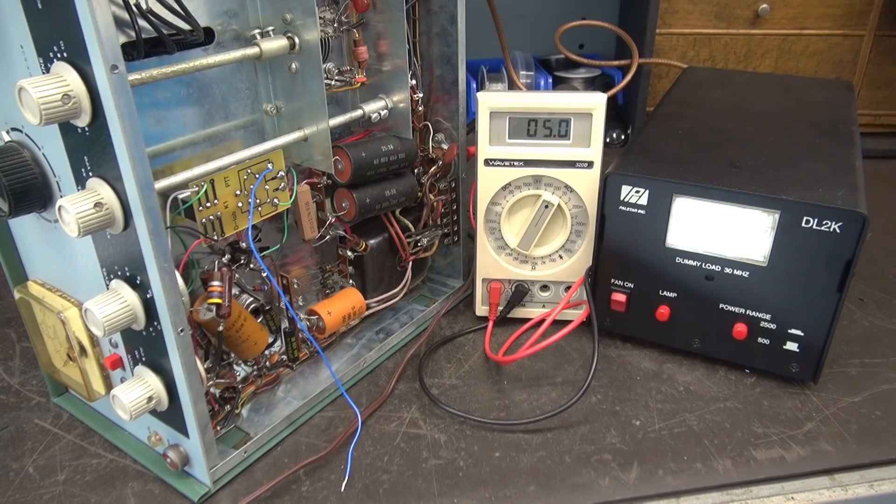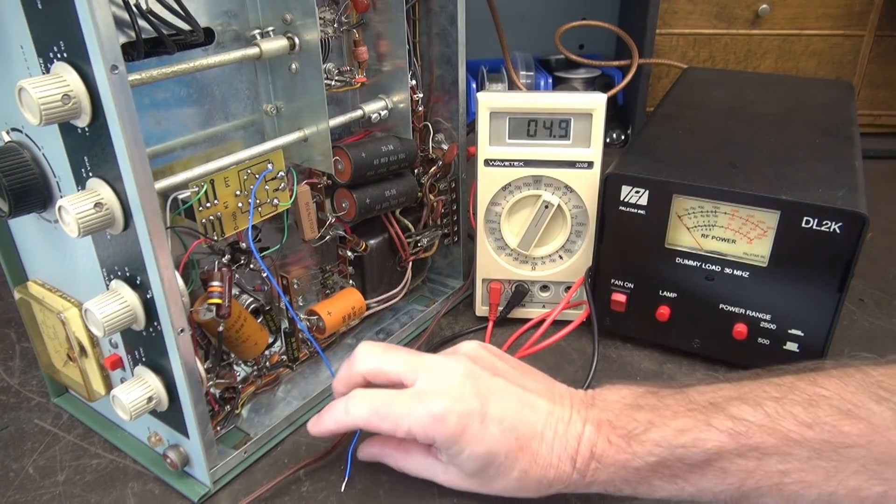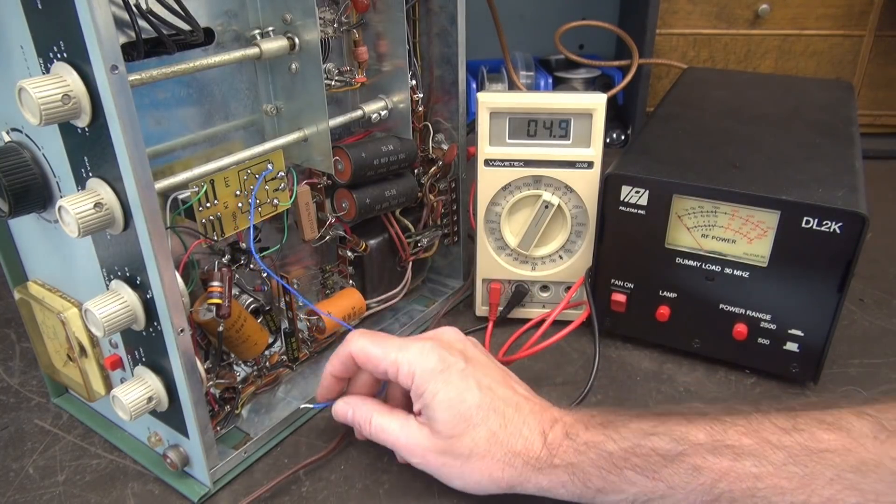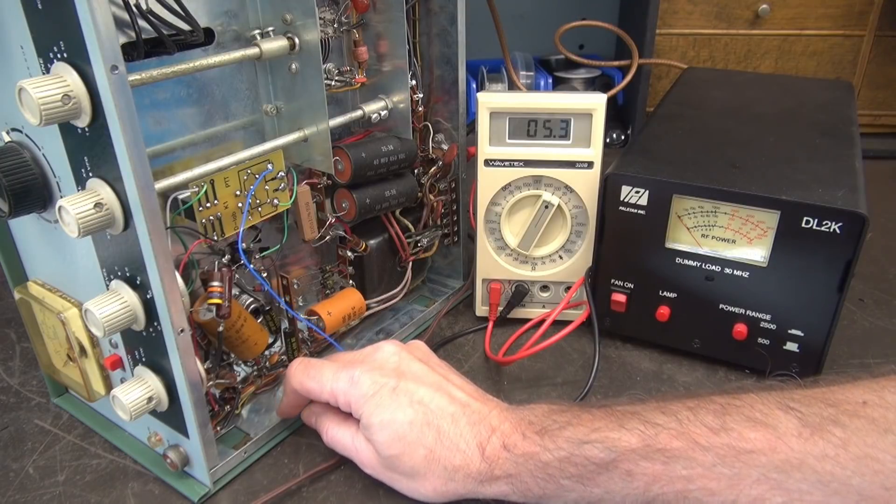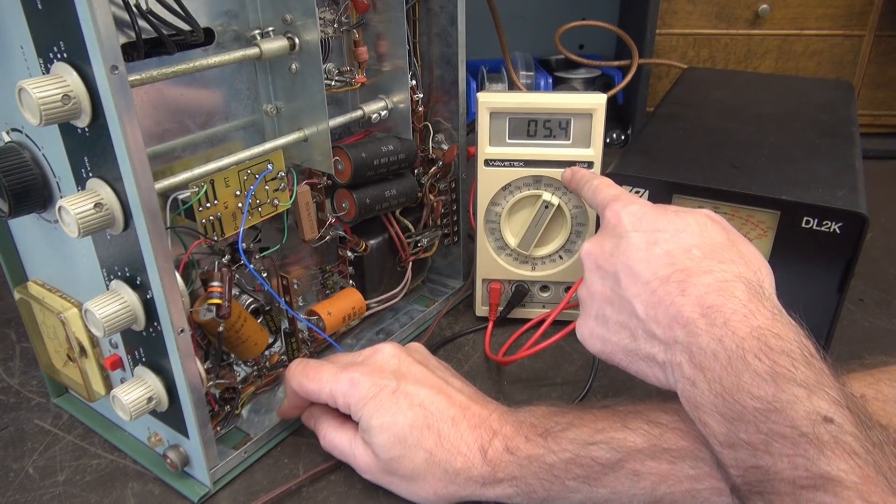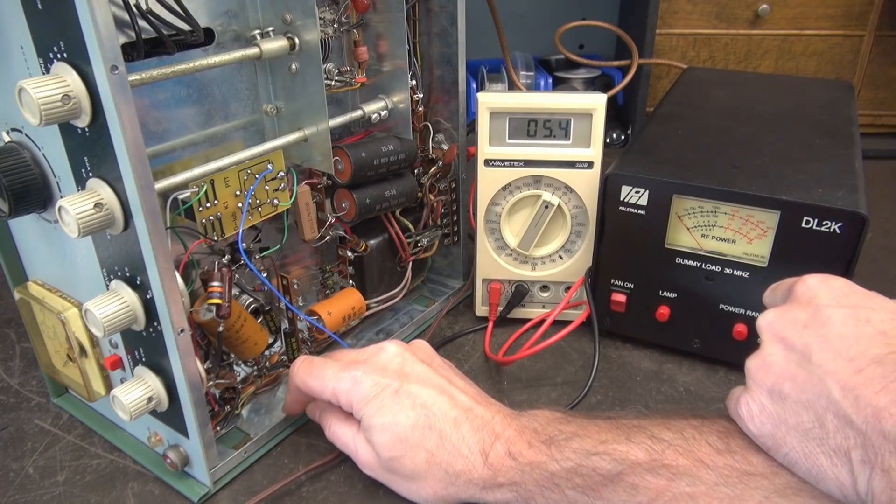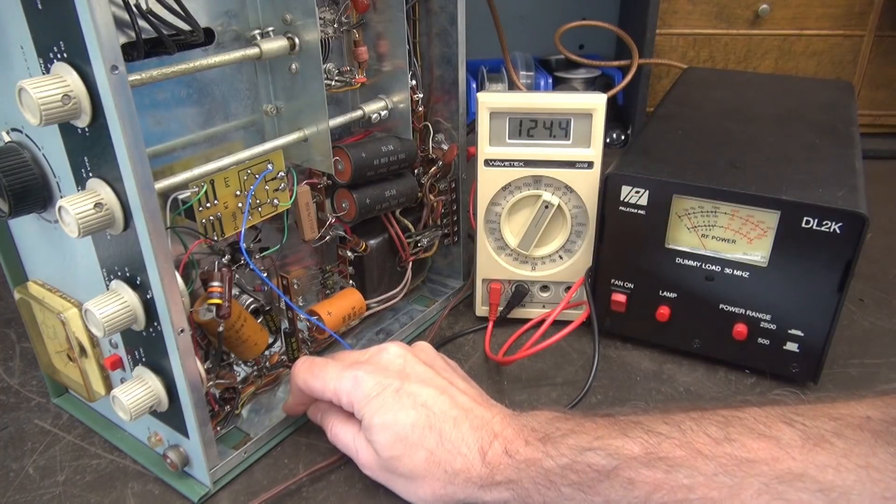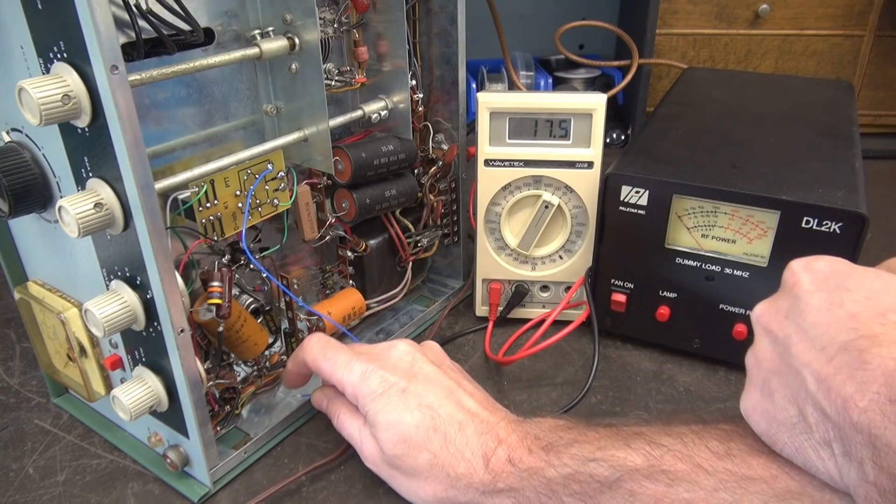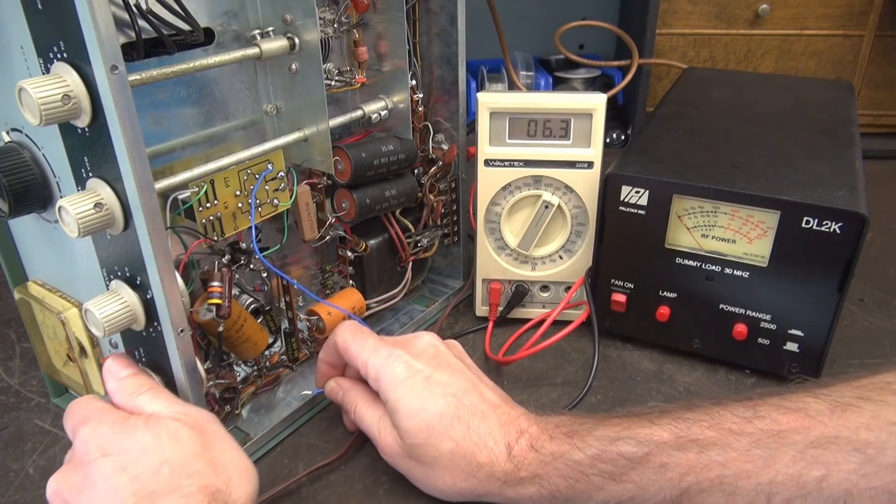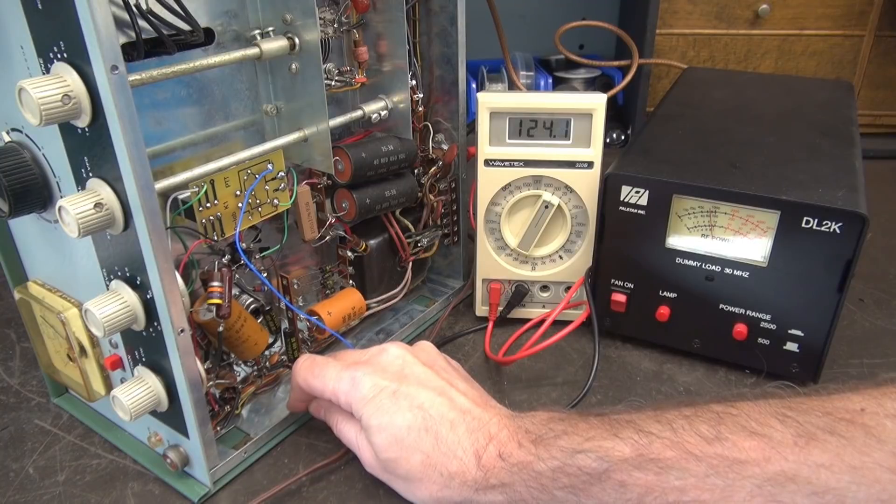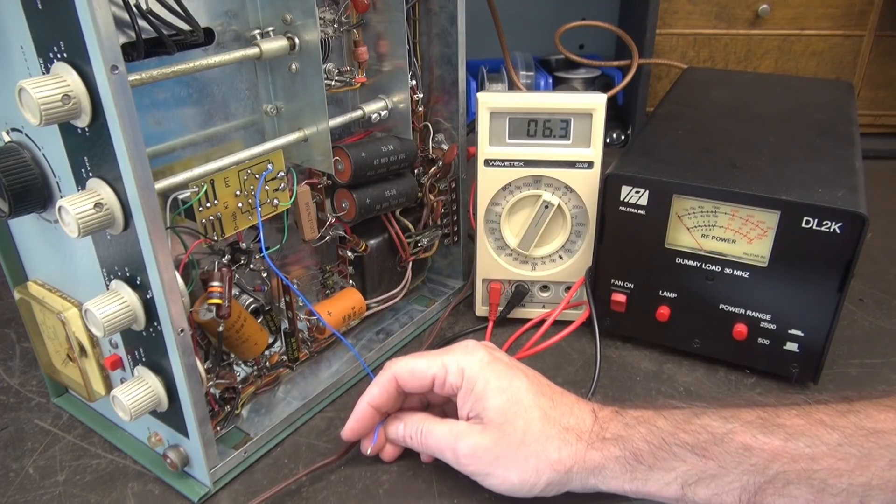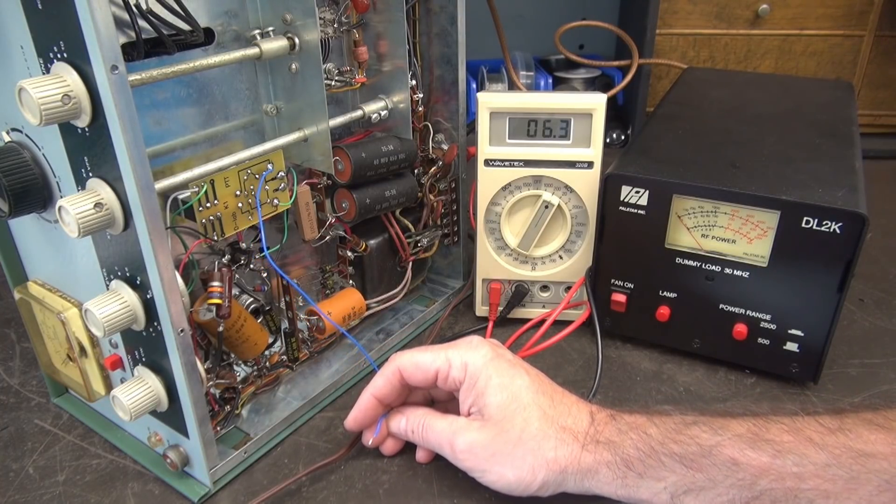Here's the initial test of the push to talk system. I do not have the mic jack installed but we do have the key line right here. We're in standby, I'm going to key it - you can see there's no voltage for the TR relay, there's no output. Now go to AM mode: 124 volts right there for your TR and we have power output. Then you can go to CW mode, same deal but higher power. Everything looks good. Next let's get the mic jack in, rewire the D104 and watch push to talk work with modulation.